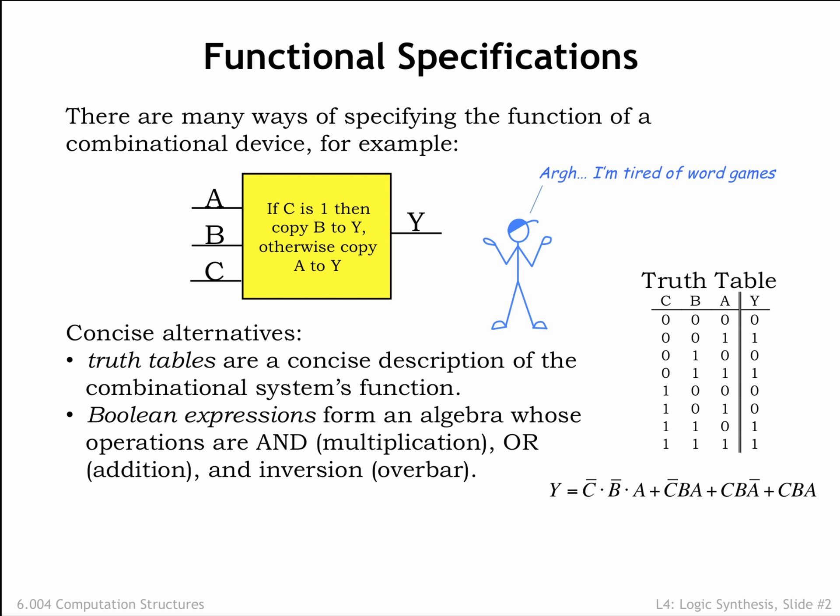Using the truth tables that describe these logical operations, it's straightforward to compute an output value from a particular combination of input values using the sequence of operations laid out in the equation.